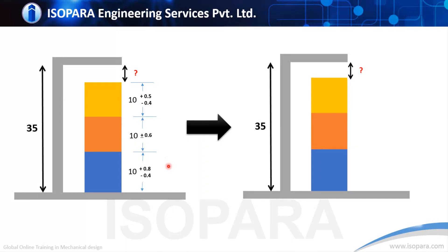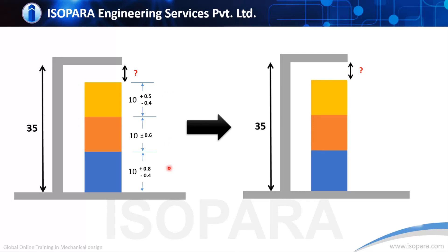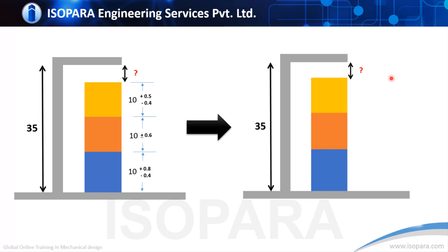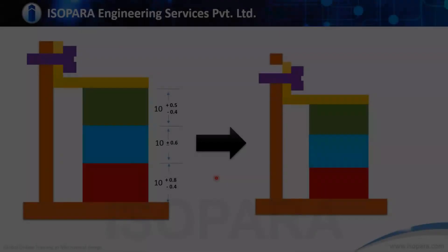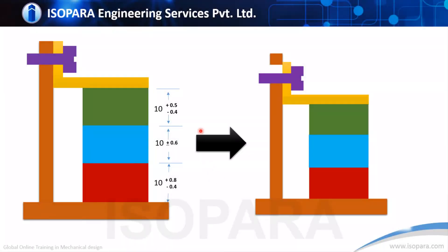Consider this simple scenario where we are keeping three blocks one above the other, each having individual tolerances, and they are assembled within a frame of fixed length of 35 mm. In the animation we can see the variation arising due to individual tolerances of these blocks. This variation gives us minimum and maximum values of the gap. To find this gap we need tolerance stack-up analysis, through which we can find the mean gap and the tolerance variation.